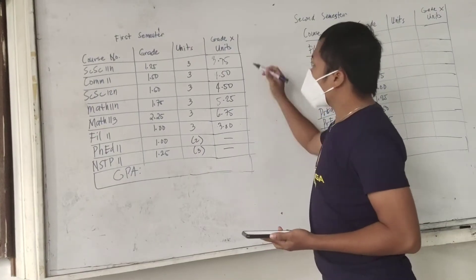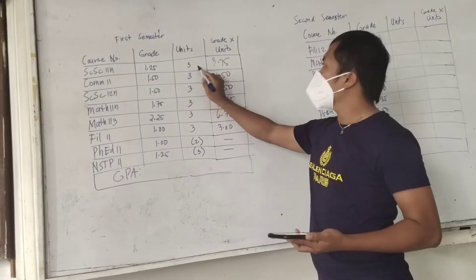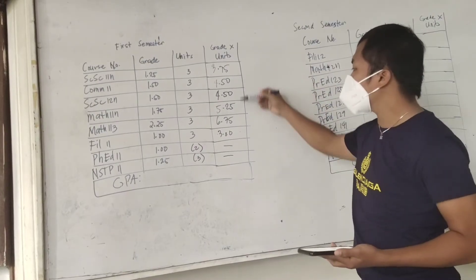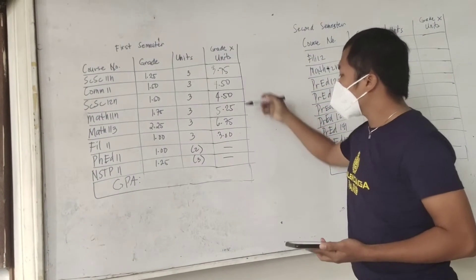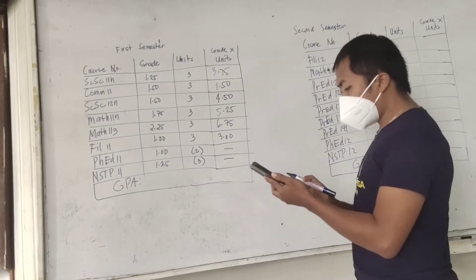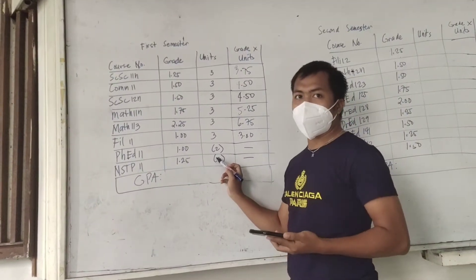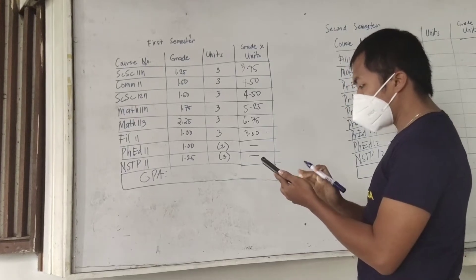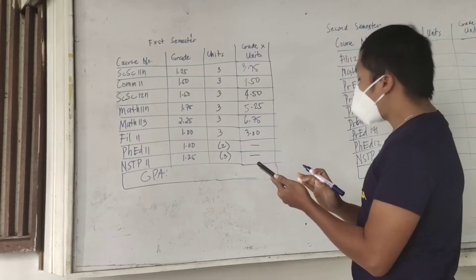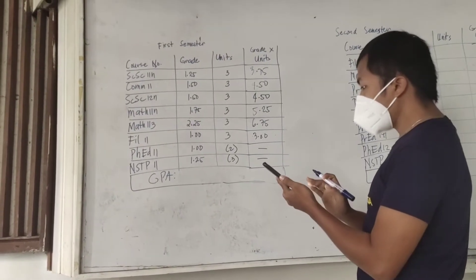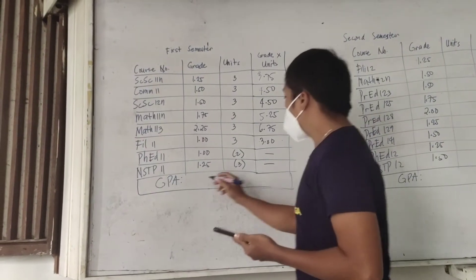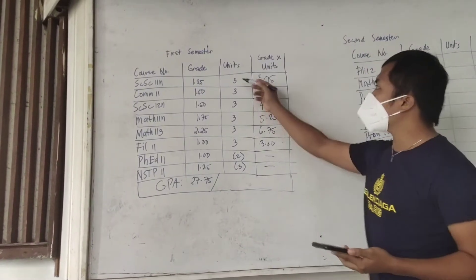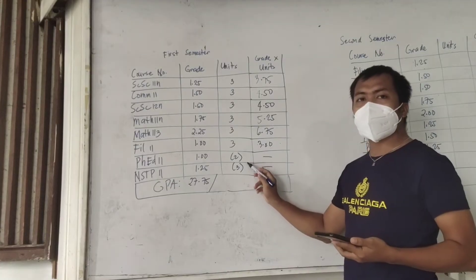Now you have the corresponding products of your grades and the number of units. The next step is to get the sum — add all these values. Then you divide that by the total number of units included. So that's 3.75 plus 4.5 plus 4.5 plus 5.25 plus 6.75 plus 3, which equals 27.75. You divide that by the number of units, excluding Physical Education and NSTP.